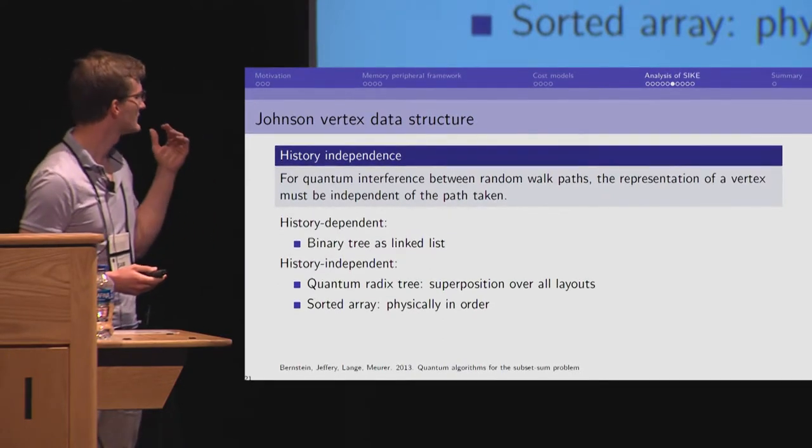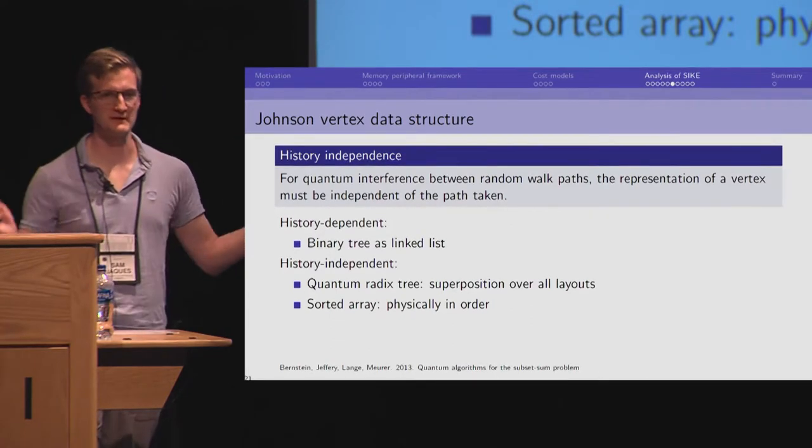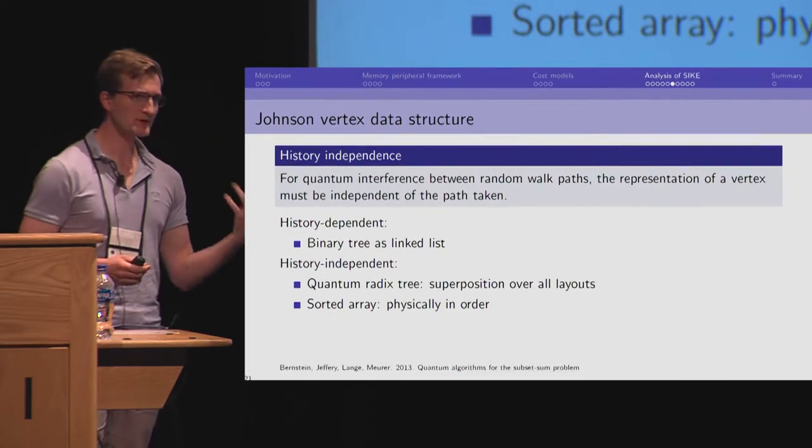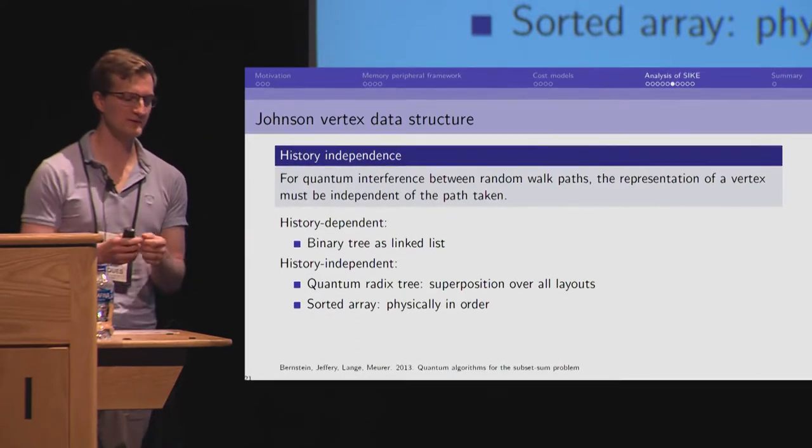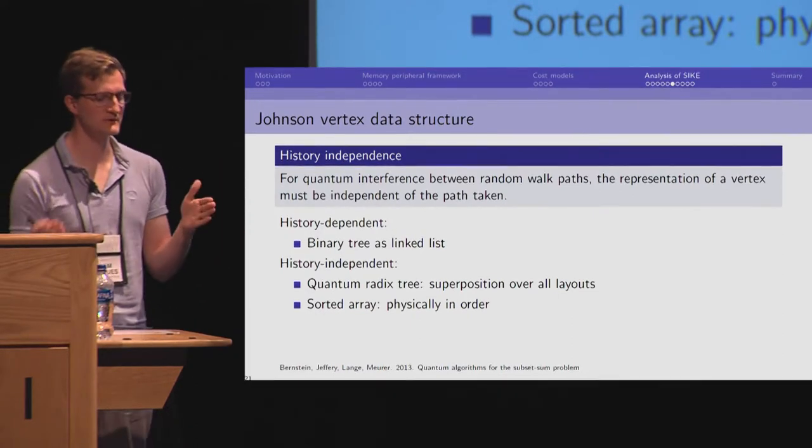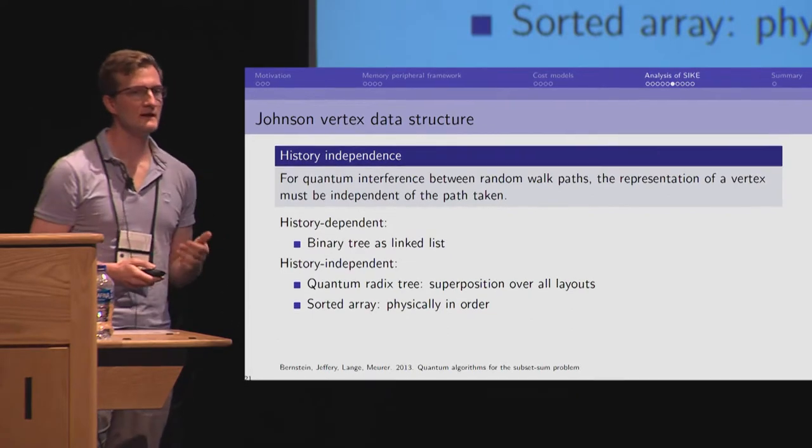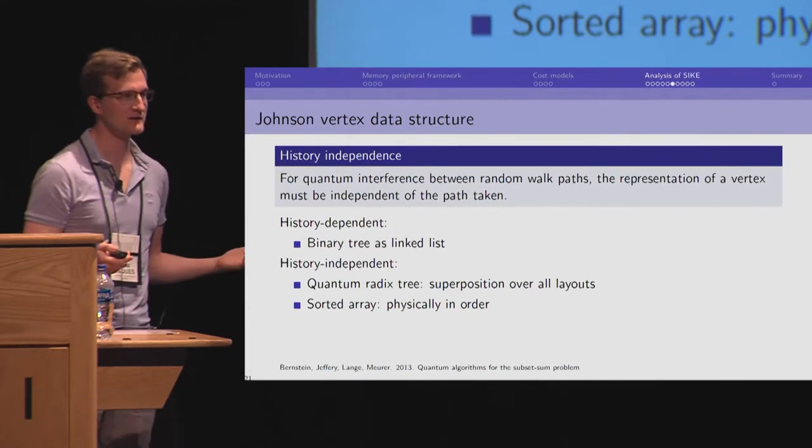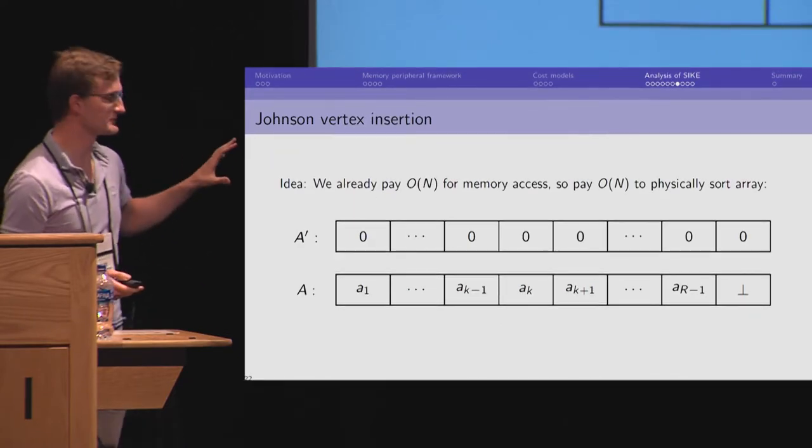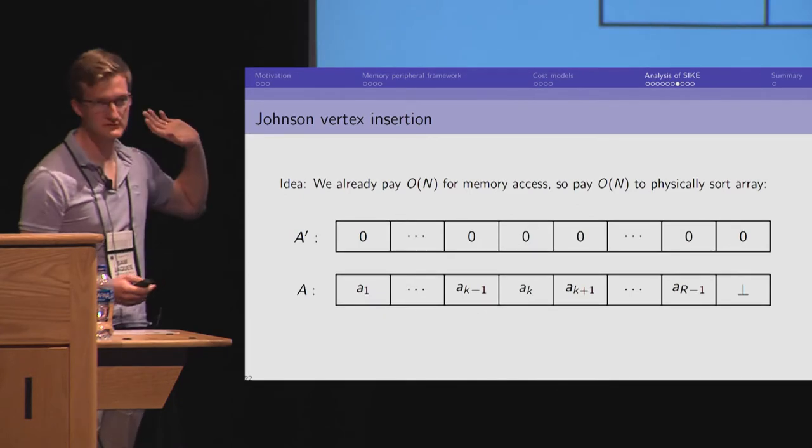But we could also have used a sorted array. And so, if the elements in an array are physically in order, usually we don't like this because if we want to insert in the middle, you have to move everything after that element down. But we're already paying a linear cost for memory access. So, this becomes more appealing. So, this is the data structure we provided in our paper. We called it a Johnson vertex. And it's just a sorted array.